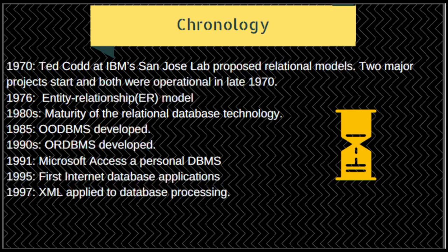In 1985, object-oriented DBMS was developed. In the 1990s, incorporation of object-oriented concepts into relational DBMS was seen, with new application areas such as data warehousing, OLAP, web and internet, text and multimedia, and ERP and MRP coming into picture. In 1991, Microsoft introduced Access — a personal DBMS created as part of Windows, gradually supplanting all personal use.